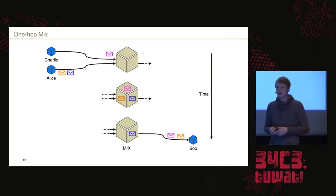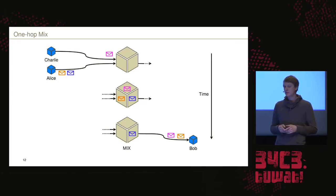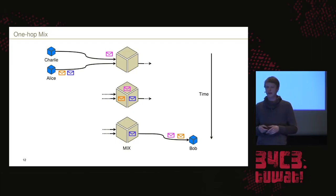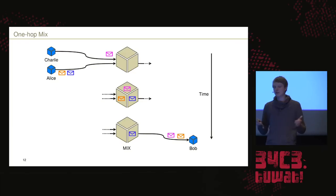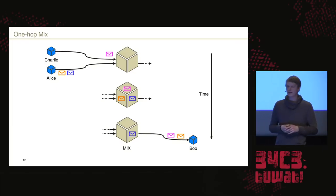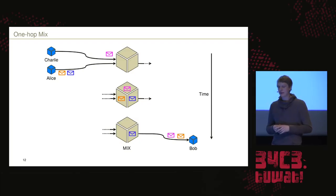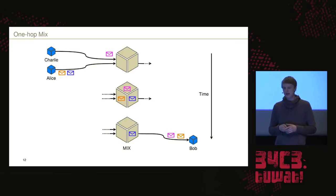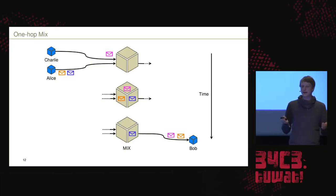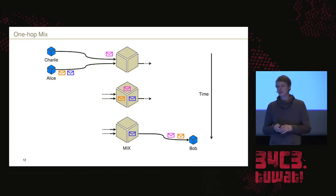Here we see the basic principle of a one-hop mix. Charlie sends a message towards the mix, and Alice sends two messages towards the mix in a certain order — Charlie's message arrives first, then Alice's blue and orange messages. The mix has a threshold: it can cache three messages. After the threshold is reached, it shuffles the messages and sends them out in a different order and with some latency. An observer watching both sides of the mix has difficulty linking the incoming and outgoing messages with each other.